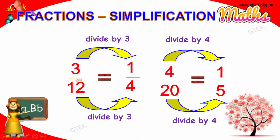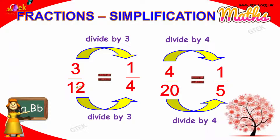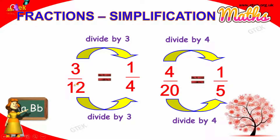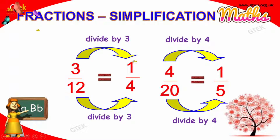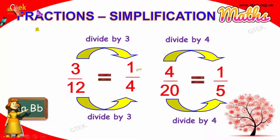Now I have three divided by twelve. Three is divisible by three and twelve is also divisible by three. Three divided by three gives one, and twelve divided by three gives four. So, one by four is the answer.